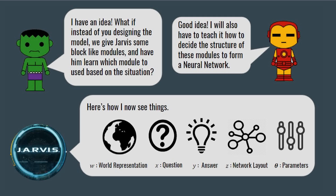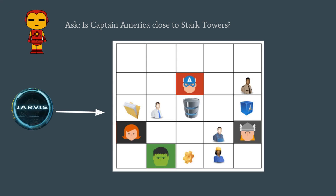The process involves five parameters shown here to model dynamic neural module networks on both visual and structured domains. Jarvis first looks at the world representation and tries to understand the structure of the question.